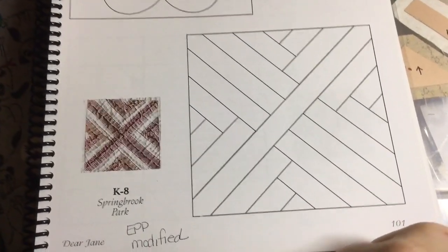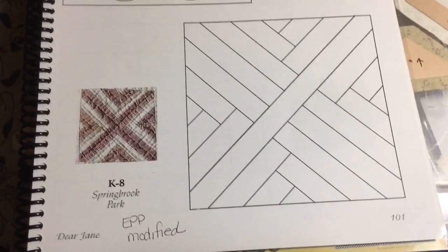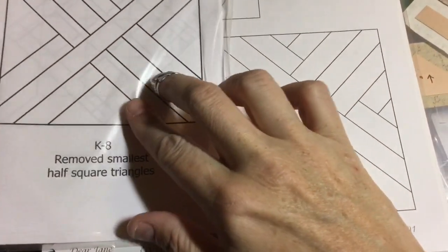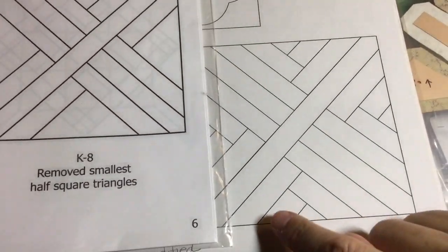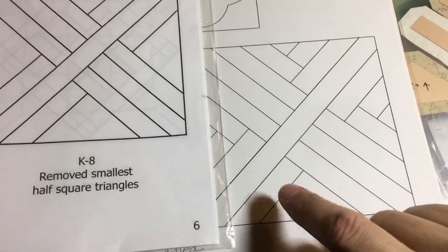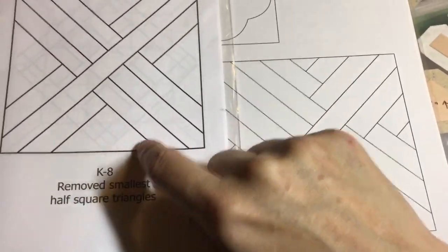Now we're up to the K8 block, and K8 is modified as well. I'm going to go to my little booklet - it's a little simplified. These corners in here were made a lot simpler.